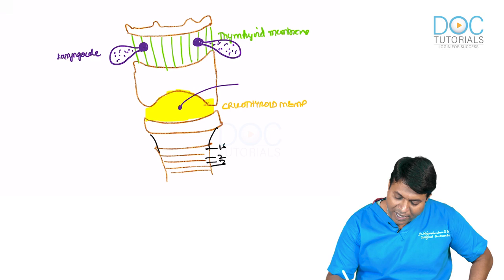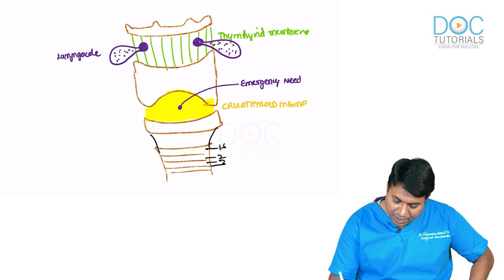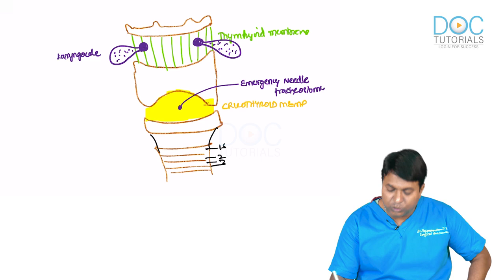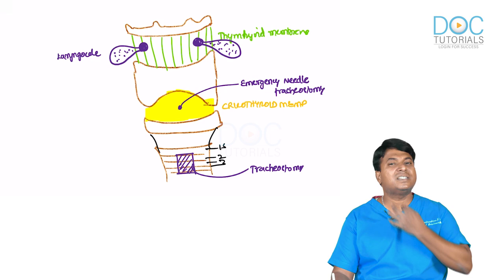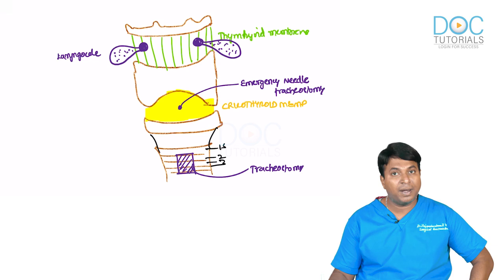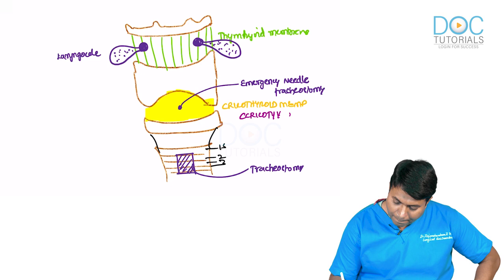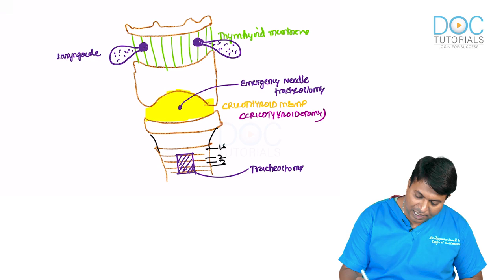For completion: the cricothyroid membrane is the site for emergency needle tracheostomy, also known as cricothyroidotomy. Elective tracheostomy is done between the second and third or fourth tracheal rings. In an emergency, we place a needle through the cricothyroid membrane. Coming back to laryngocele — it has classical clinical features.